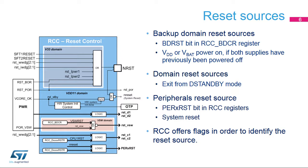The backup domain reset resets the backup domain powered by VBAT, which contains the RTC and the external low-speed oscillator. The domain reset resets the complete D1 and D2 domains when the corresponding power switch is activated. The hold-boot function can be used to set one of the two processors to hold after a system reset or an exit from standby mode. This function can be useful if one processor has to boot in advance to perform system initialization. Note that when one of the processors is in hold, it does not prevent the system from entering standby mode.